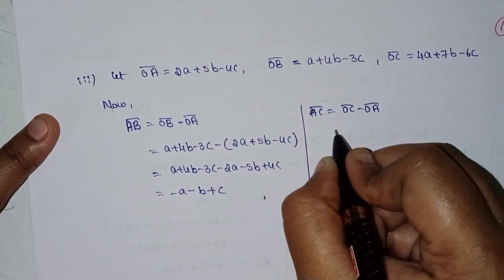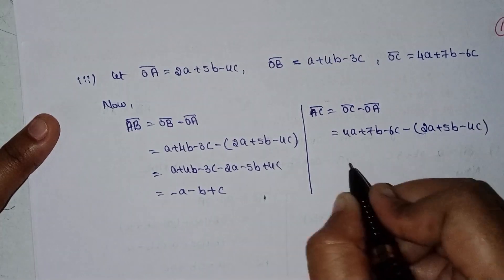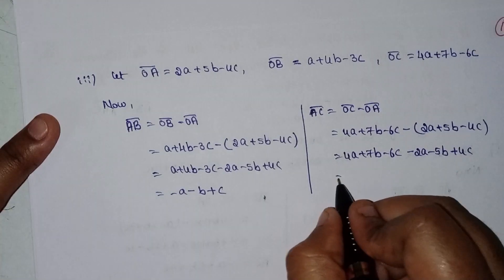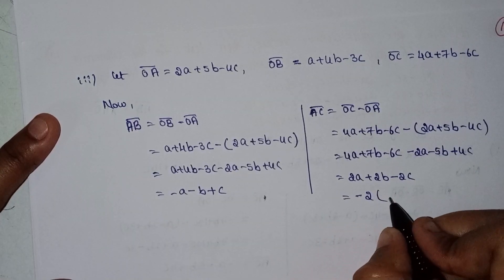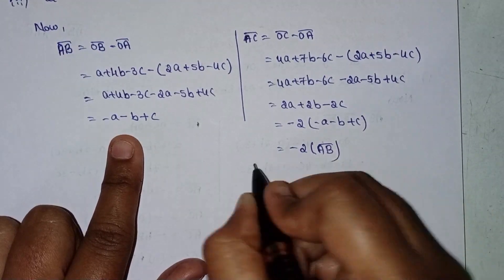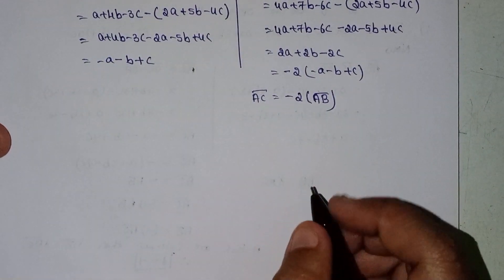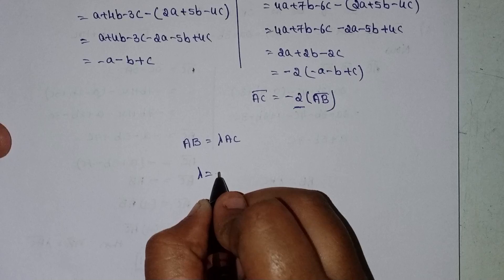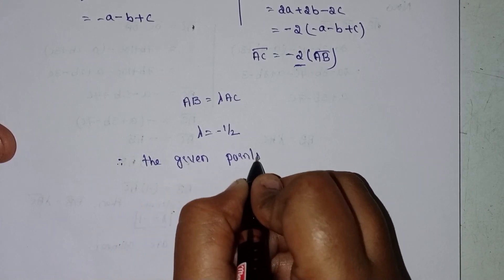AC equals OC minus OA: 4a plus 7b minus 6c minus (2a plus 5b minus 4c), giving 4a plus 7b minus 6c minus 2a minus 5b plus 4c, which equals 2a plus 2b minus 2c. Expressing AB in lambda form: AB equals minus 1 by 2 times AC. Therefore lambda equals minus one-half, and the given points are collinear.